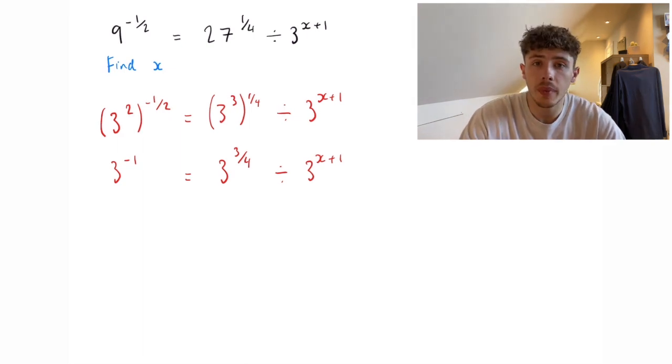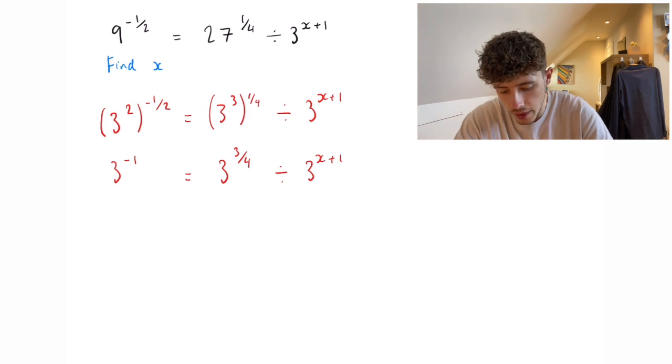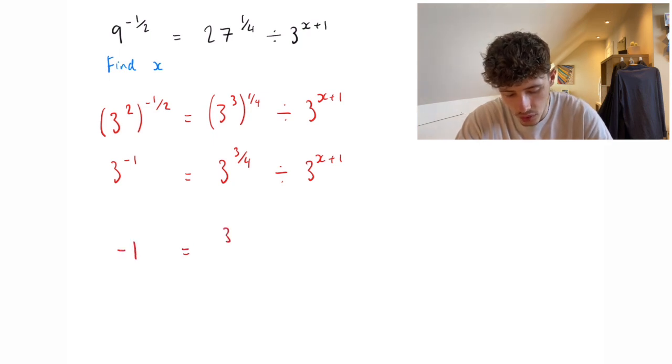Now we can basically just ignore the 3 on each of them. If we just look at the powers, we know that minus 1 should equal 3 quarters take away x plus 1.